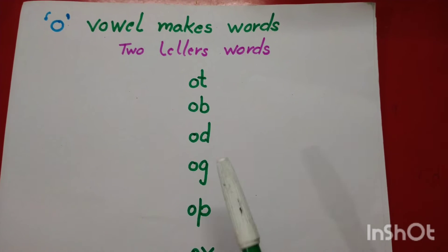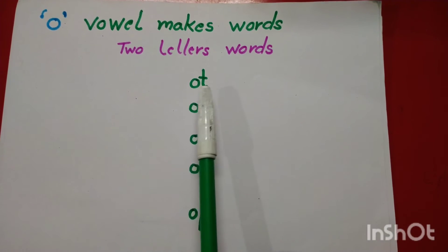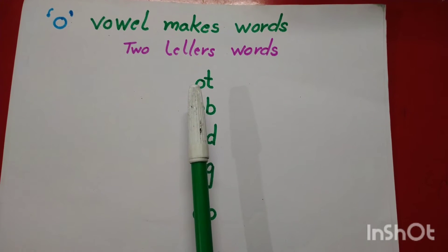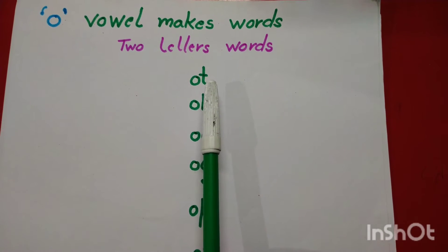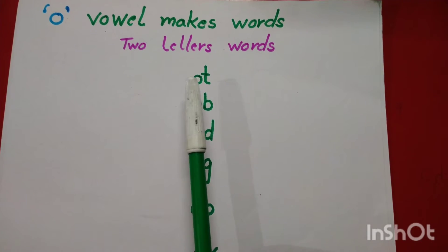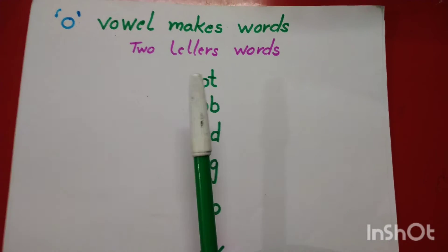And the first word is O T. Speak the sound of O, O, and speak the sound of T, T. O, T, O, T. Next,